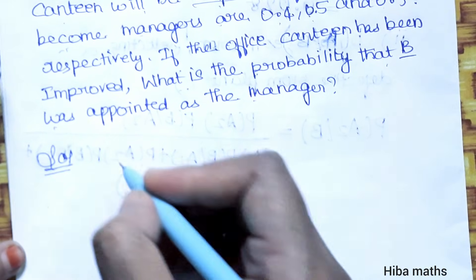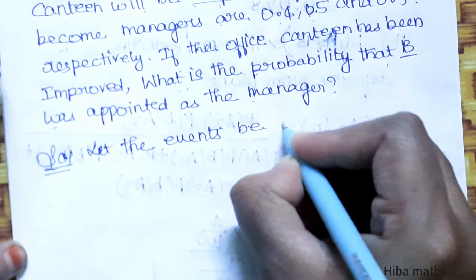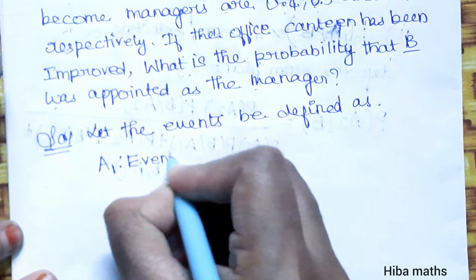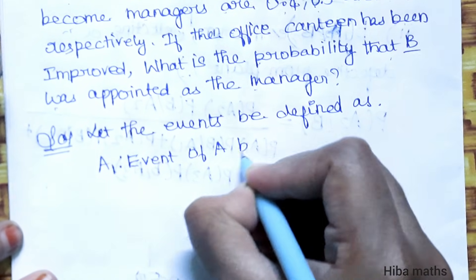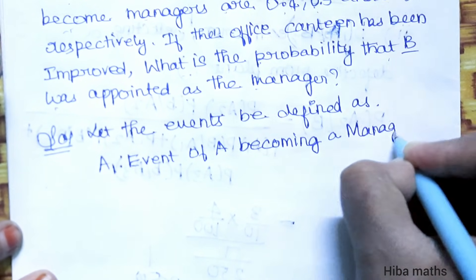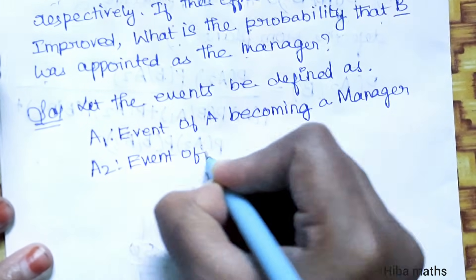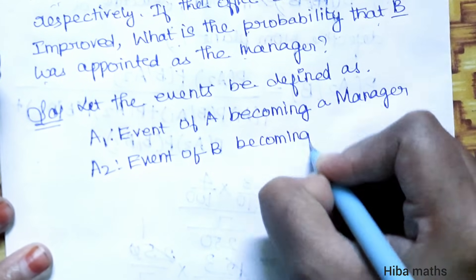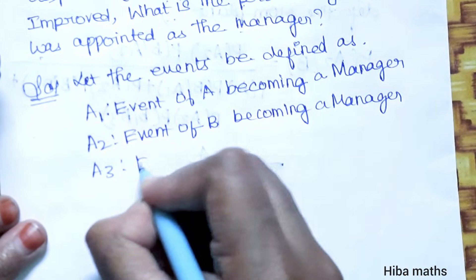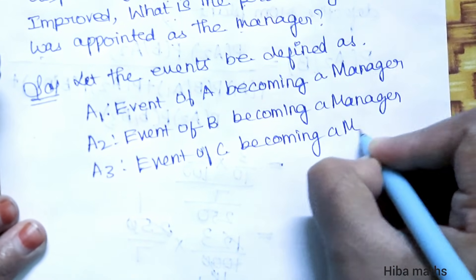For the solution, we define three events. Let A1 be the event of A becoming a manager, A2 be the event of B becoming a manager, and A3 be the event of C becoming a manager.